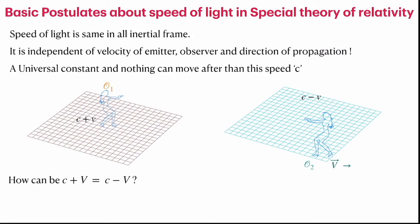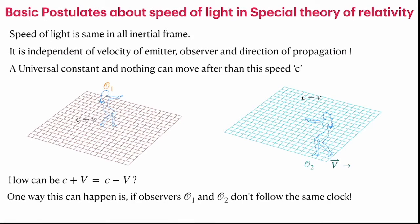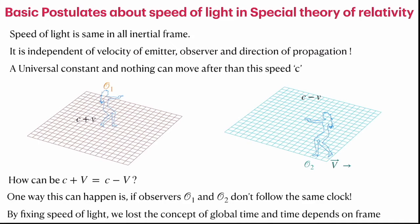However, Galilean transformation says the velocity should change. One way this can be reconciled is if observer O1 and O2 do not follow the same clock — O1 has a different clock than O2 — and their space and time are adjusted such that the velocity of light is the same in both frames. This is the basic idea of relative time, which comes from the speed of light being the same for all inertial observers. By fixing the speed of light as a universal constant, we lose the concept of global time. Time now depends on the observer in such a way that the velocity of light is preserved.